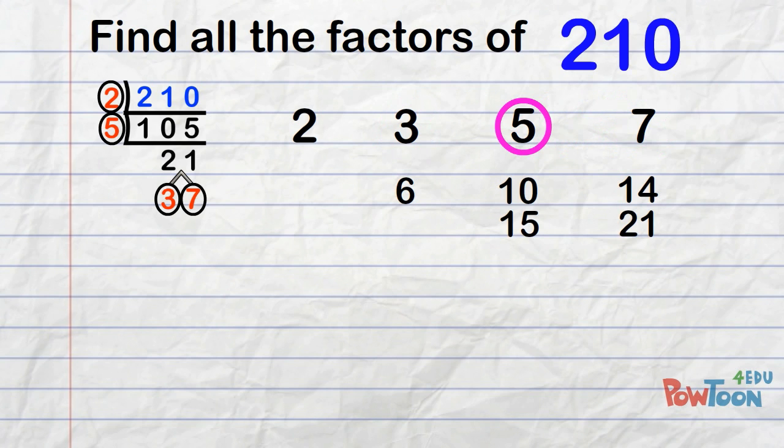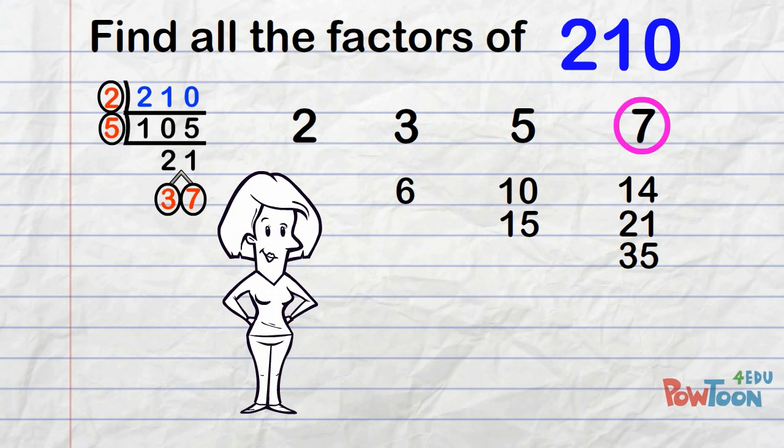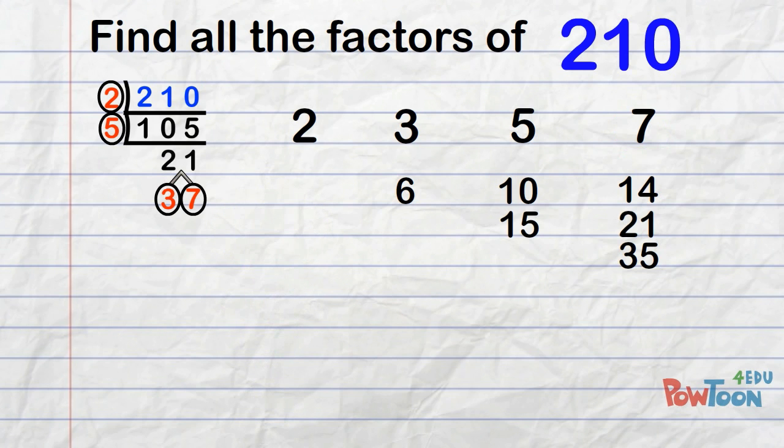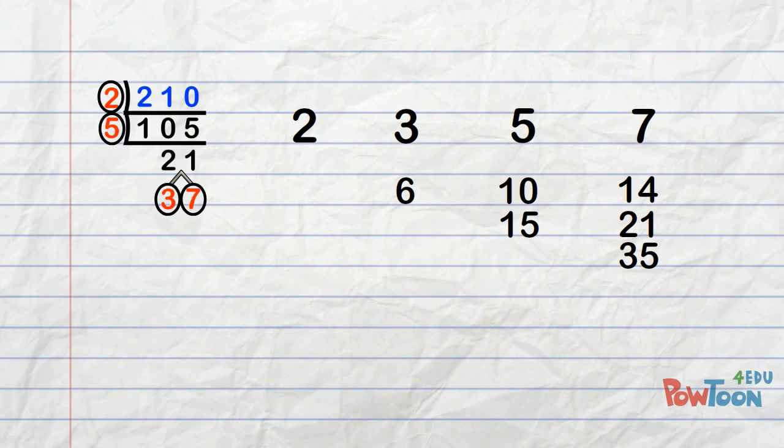I don't need a line for 7 because 7 has already been multiplied. We also have to multiply combinations of our prime factors together too.